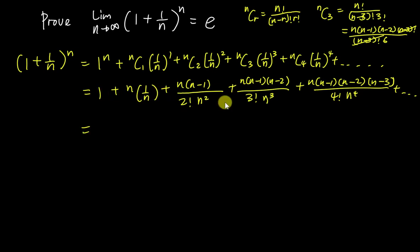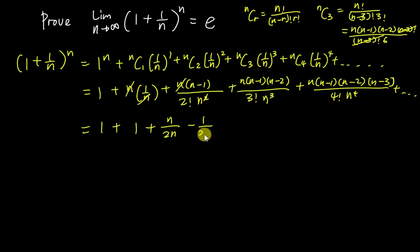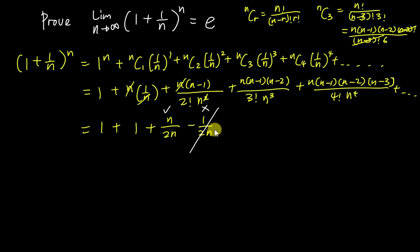Now I need to simplify these terms. For the nC2 term, if I cancel n from numerator and denominator, I can separate it into two fractions: n over 2n minus 1 over 2n. The key point is: any term that still has n in the denominator will become zero when I substitute n = infinity, since any constant divided by infinity is zero. So I only care about the constant terms.